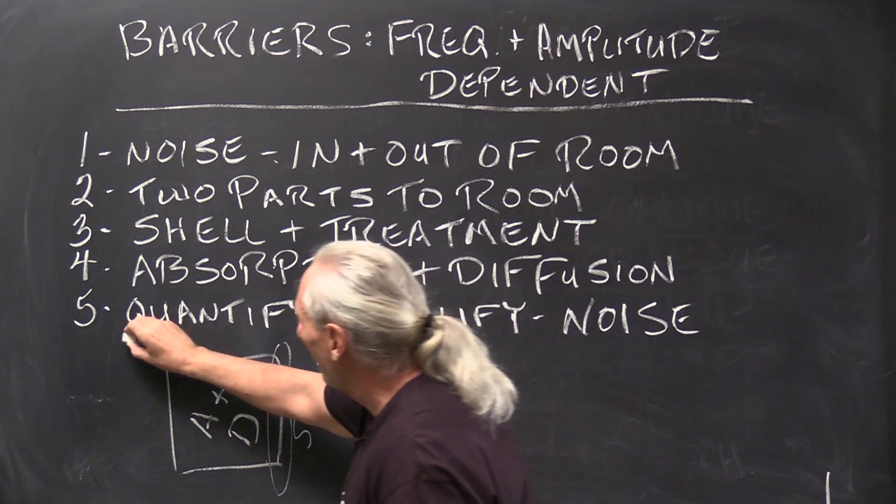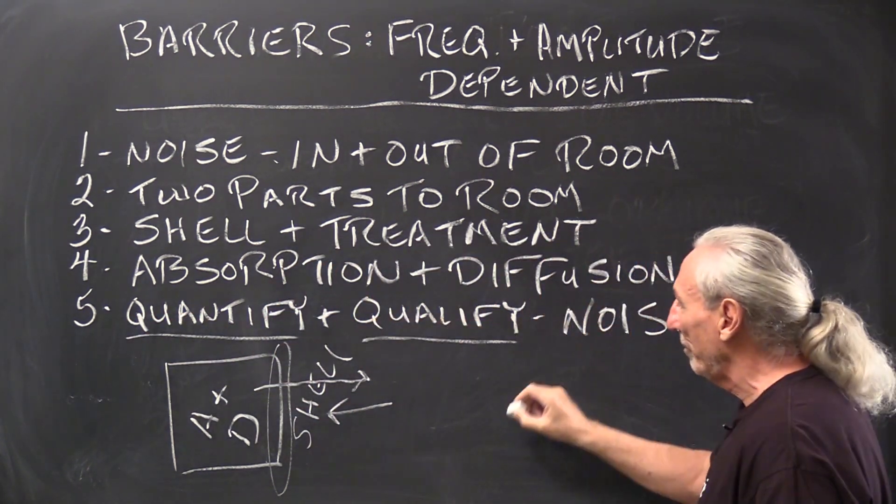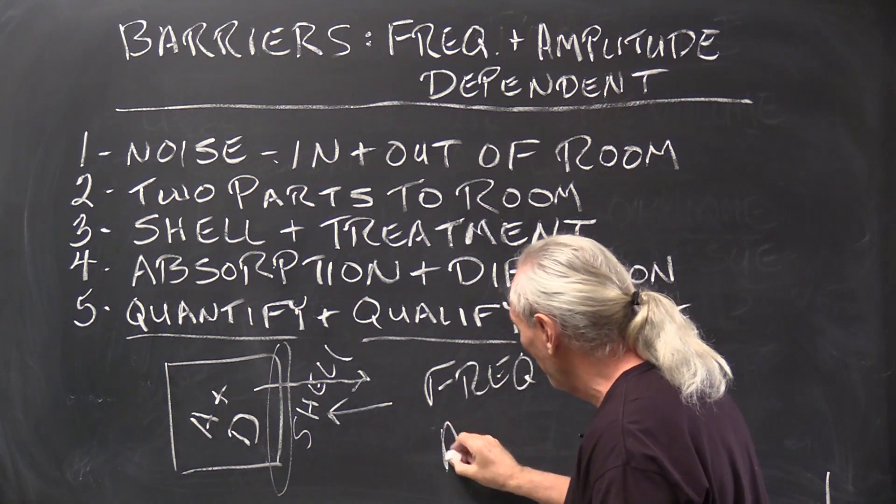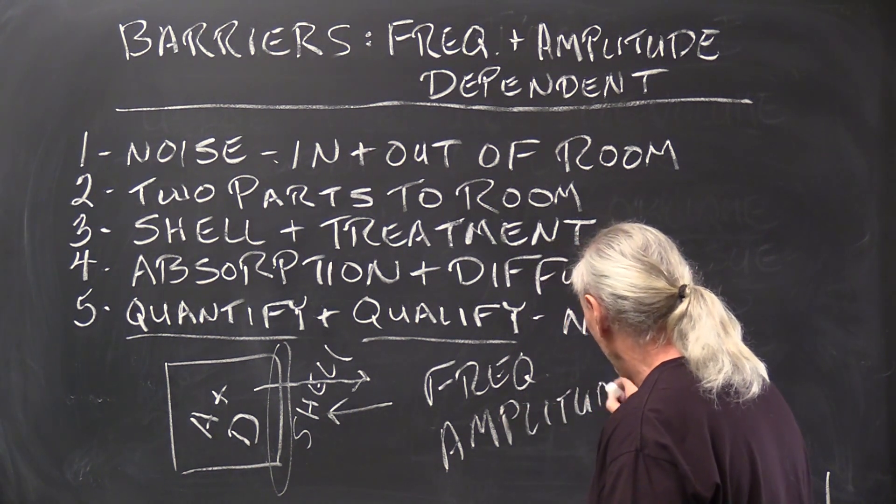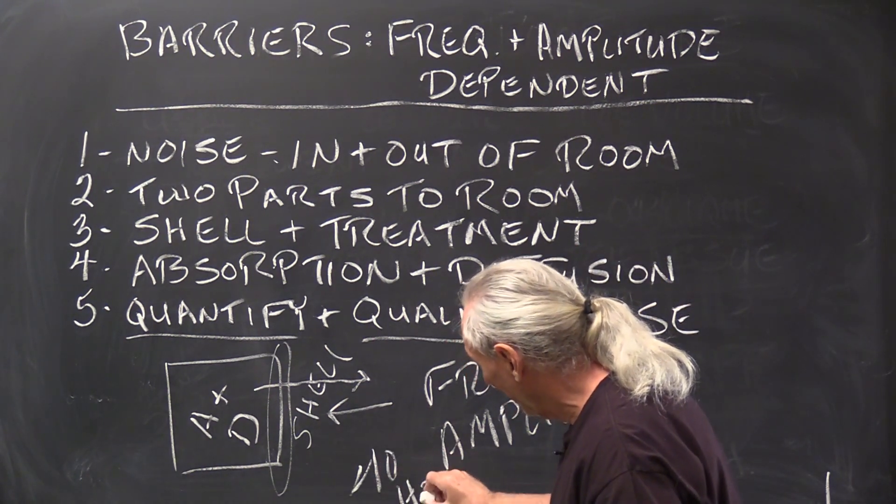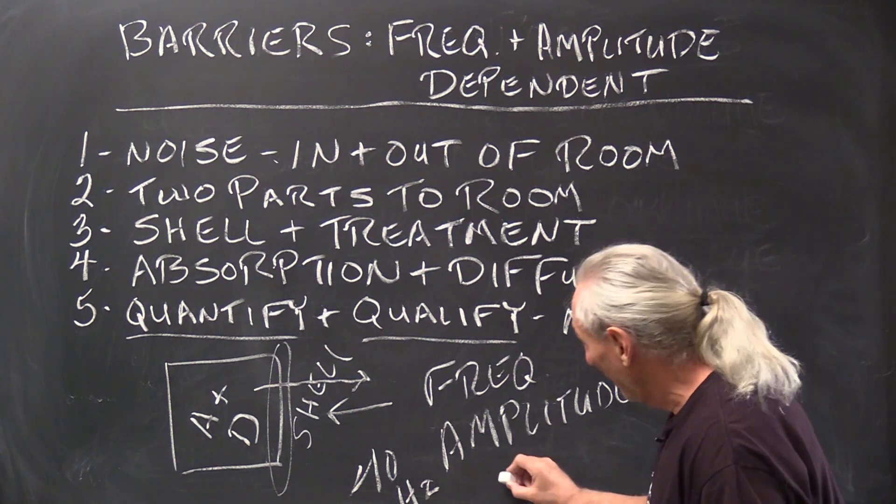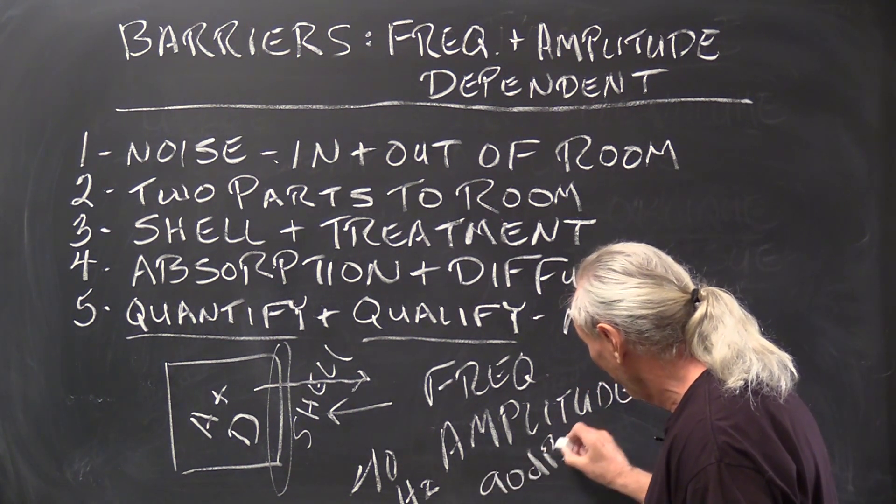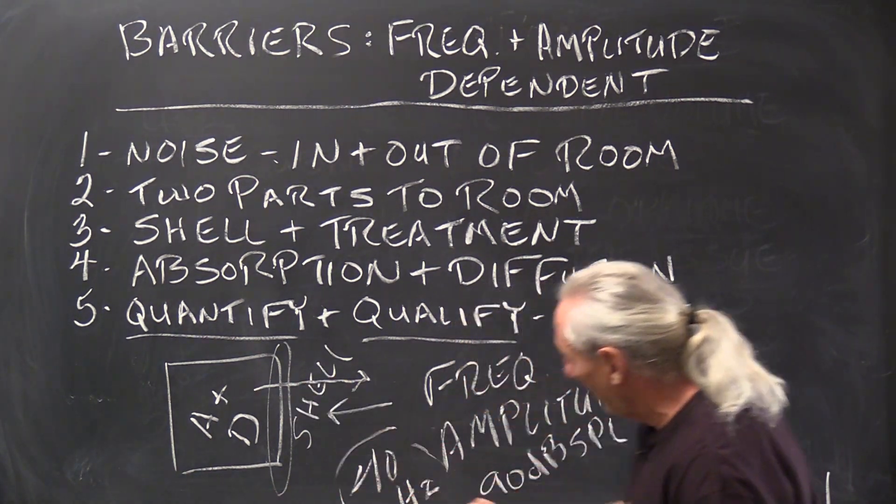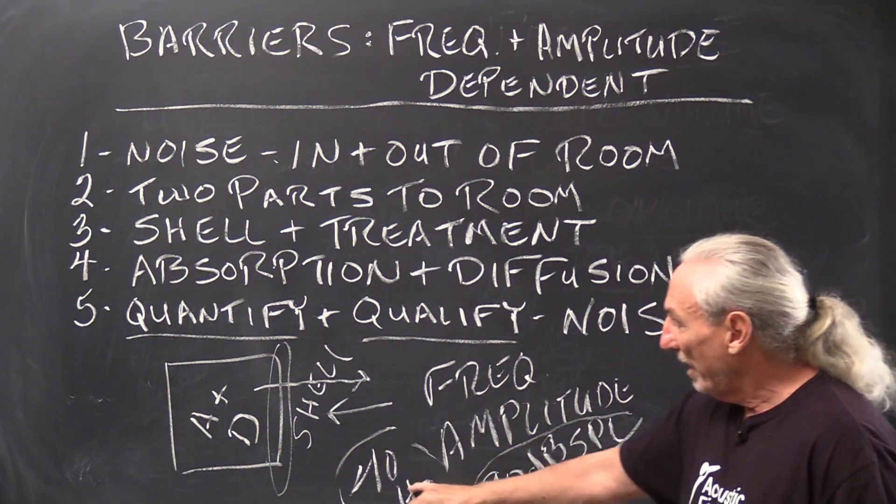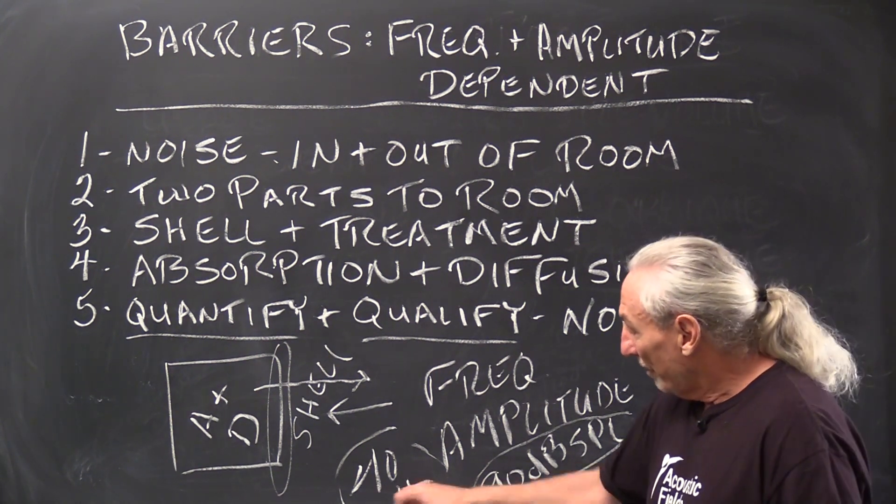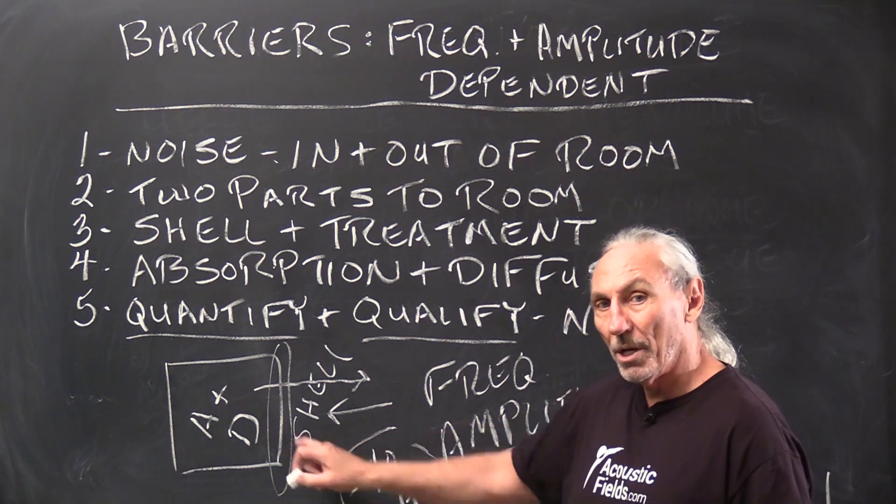So the wall or the structure or the shell of our room is what we need to focus on. When we're measuring noise, we need to quantify and qualify the frequency of the noise and the amplitude. So is the noise from the garbage truck 40 hertz, which most of it is. How strong is it? Is it 90 dB SPL? So that's what we have to keep in mind, these two numbers.